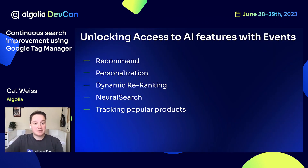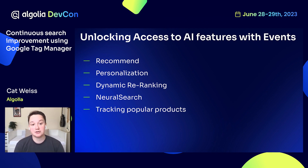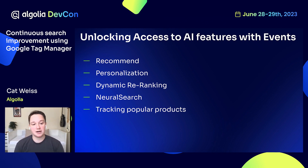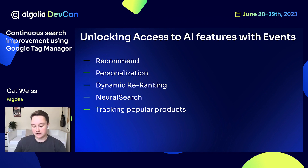You've probably heard people talking today about events and the Insights API. These are Algolia's ways of tracking your users' actions, and they are necessary in order to use our AI features like Algolia Recommend, Personalization, Dynamic Reranking, and our newest hybrid engine, Neural Search. You can also track which products are the most popular on your site and identify opportunities for merchandising with click and conversion events.